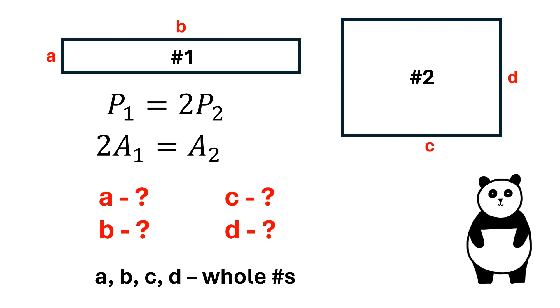Let's solve this problem. We have two rectangles. The perimeter of the first rectangle is equal to two times the perimeter of the second rectangle. The area of the second rectangle is equal to two times the area of the first rectangle.